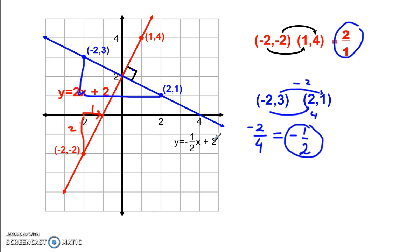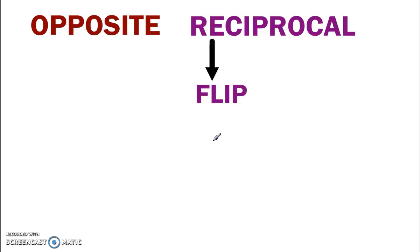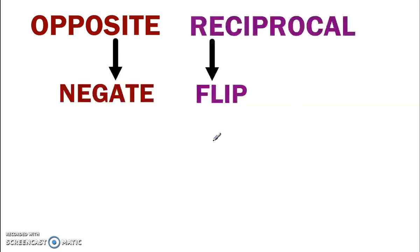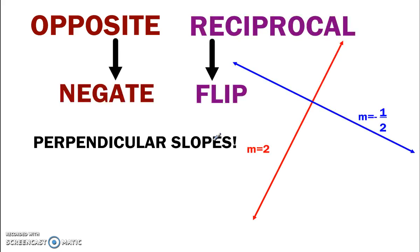And so you can practice saying that. I've got a little song for you that you can get stuck in your head. It goes, Opposite reciprocal, flip and negate. Opposite reciprocal, flip and negate. Opposite reciprocal, flip and negate. Perpendicular slopes. Now go and sing that to your parents.